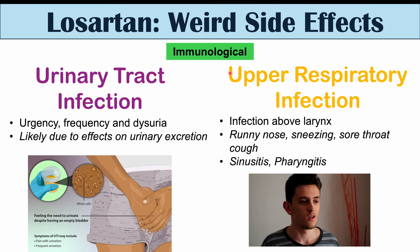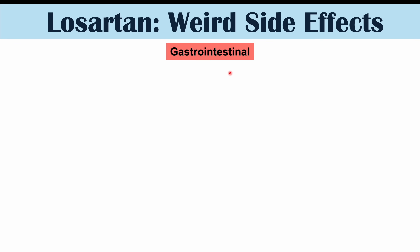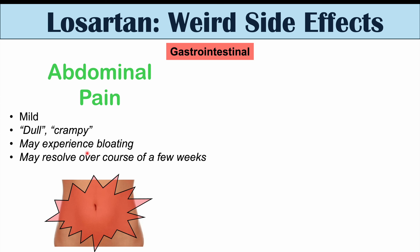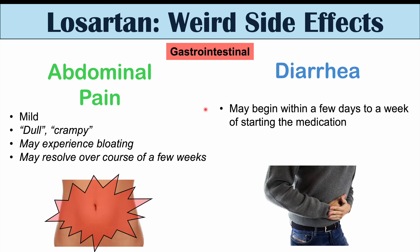Gastrointestinal side effects can also occur with Losartan. Abdominal pain is often mild — described as dull and crampy — and patients may also experience bloating. It tends to occur when first starting the medication and slowly resolves over a few weeks. This is likely because angiotensin receptors, specifically the AT1 receptor that Losartan blocks, are present in the gastrointestinal system. Diarrhea has also been noted, usually starting a few days to a week after beginning the medication. It may be due to similar mechanisms, as well as changes in electrolytes and gut microbiome. Some patients have reported up to two to four stools per day.